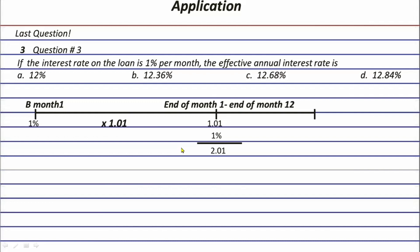Since we already understand that the one percent amount grows as time passes, we need to use future value concepts. We cannot use present value here, because present value applies when an amount decreases to zero over time — like payables and receivables, whose balances decrease as payments are made. So the present value formula doesn't apply in this case.